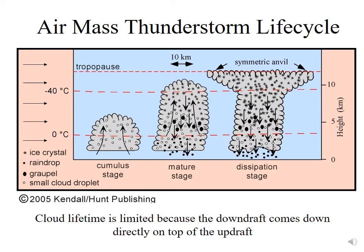The last stage is the dissipation stage, when all of the vertical motions inside the cloud are essentially on the way down. The cloud will start to evaporate and will often leave a residual anvil cloud up above — that part of the anvil will remain when the lower part of the cloud rains away. One of the reasons why these air mass thunderstorms don't last very long is because they're vertically oriented. When it starts to precipitate, the downdrafts come down right on top of the updrafts, which limits the overall cloud lifetime.